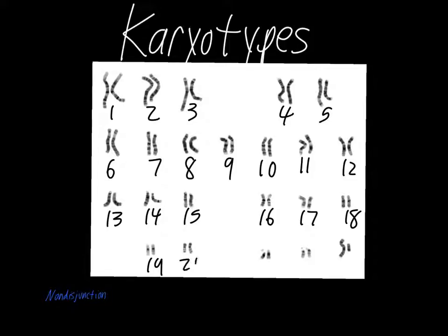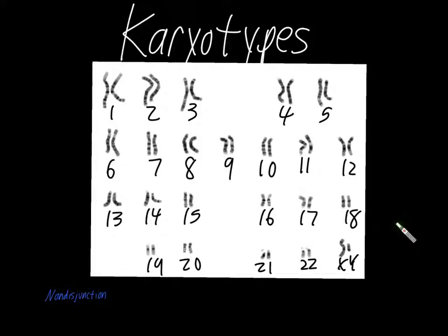There are 23 pairs of chromosomes, but we do not number the last one. The last pair is the pair that determines gender. This one happens to be a male karyotype, so we'll go with an X and a Y chromosome here. The way you can tell that is based on the size of the chromosomes — the X chromosome is far larger than the Y chromosome.